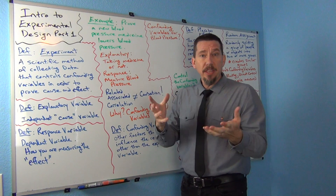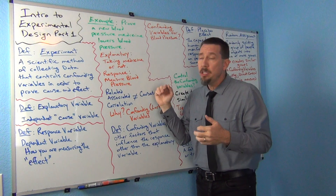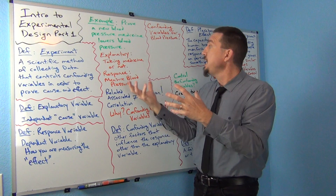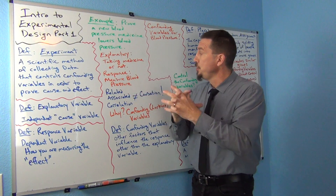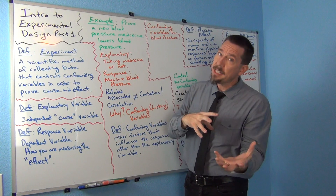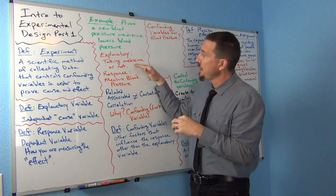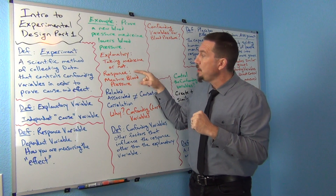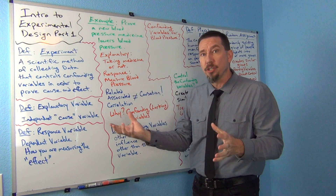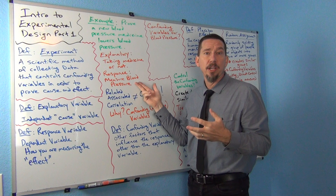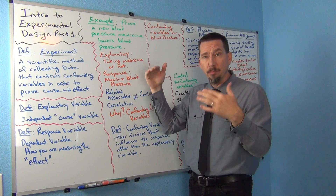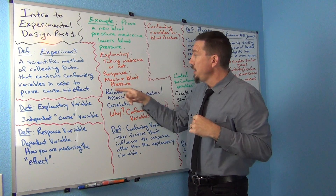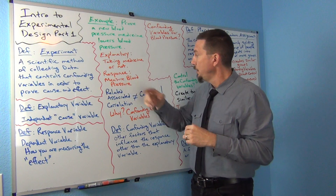The explanatory variable is what's doing the causing — are you taking this medicine or not? So taking the medicine or not would be the explanatory variable. And the response variable is what effect I'm trying to measure: blood pressure. I want to make sure their blood pressure is going down, so that's the response variable.